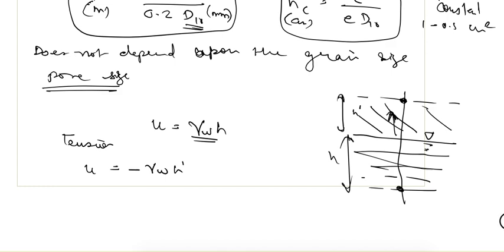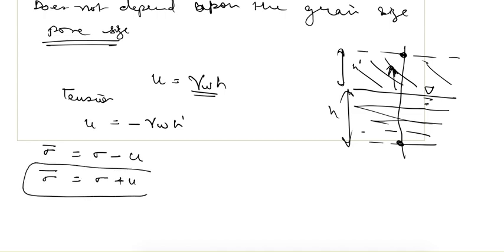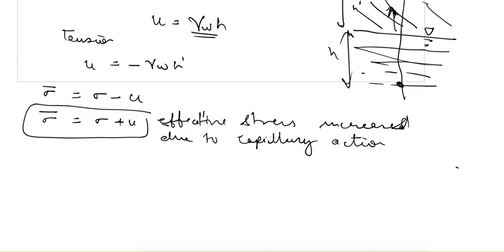The pore water pressure in the capillary zone is negative. Since effective stress equals total stress minus pore water pressure, and pore water pressure is negative, the effective stress becomes σ + u — meaning effective stress increases due to capillary action. Because effective stress increases, shear strength also increases.